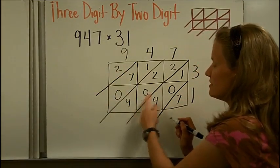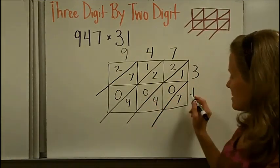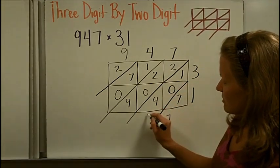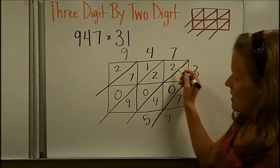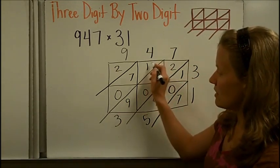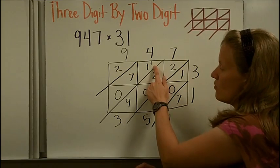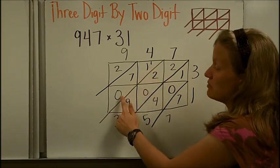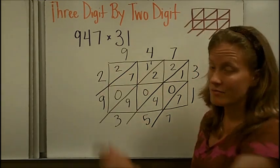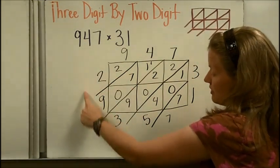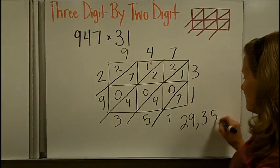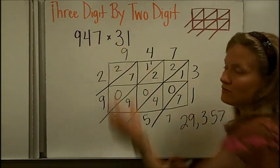Each of those had a 0 in the tens spot in that box. Adding diagonally: just a 7 in the first column; 1 plus 0 plus 4 is 5 in the next; 9 plus 4 is 13 — put down the 3 and carry the 1; then 1 plus 1 plus 7 plus 0 is 9; and just a 2 in the last column. Reading left to right: 29,357 is the product of these two factors.